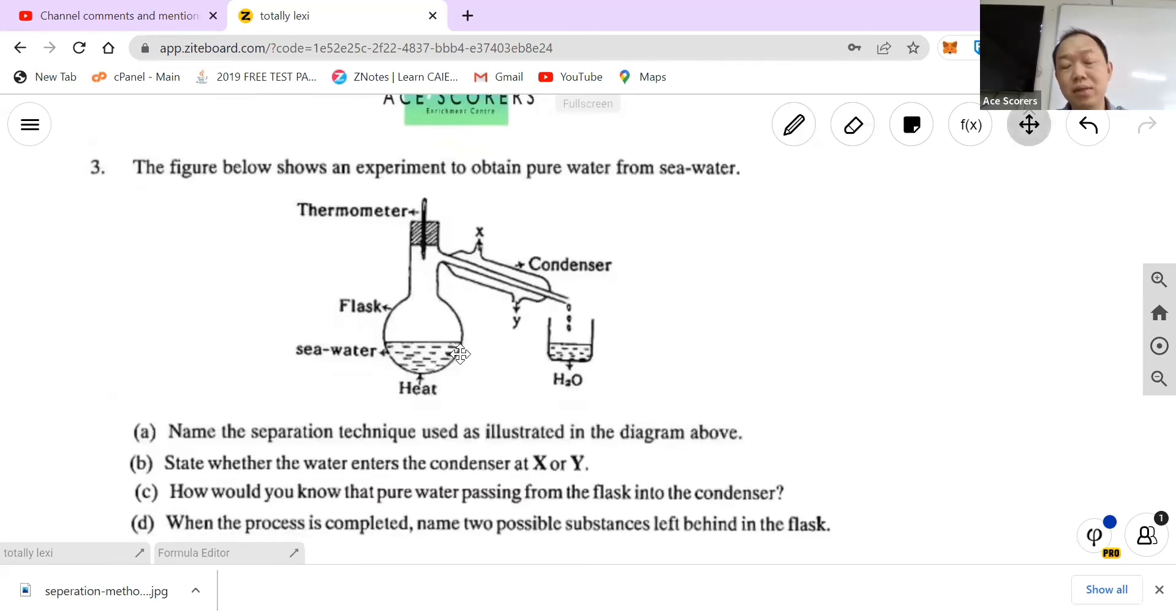So here is another typical question that they love to ask with regards to distillation. Now when it comes to distillation, basically you have two miscible liquids over here but they have different boiling points. So the first thing to take note is that your thermometer, the bulb, has to be here at the opening of the condenser. Next thing you need to know is that water goes in from the bottom and comes out from the top.